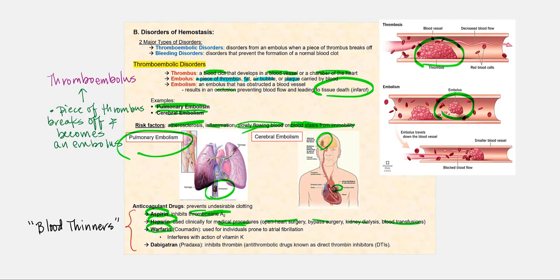Another anticoagulant drug is warfarin, also known as Coumadin. And what makes this an anticoagulant drug is it interferes with the action of vitamin K. We discussed the importance of vitamin K because it's needed to make a number of these clotting factors.